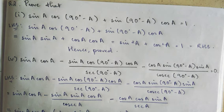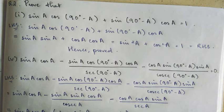LHS: we write sin A cos(90 minus A) plus sin(90 minus A) cos A. Using the formula for complementary angles, cos(90 minus A) equals sin A. So we substitute: sin A times sin A, plus sin(90 minus A) which equals cos A, times cos A.